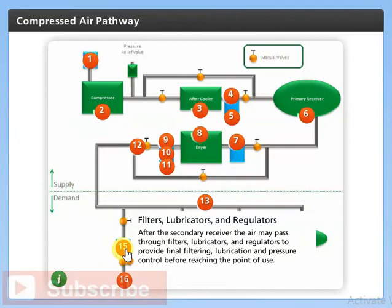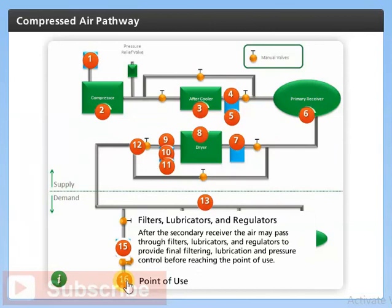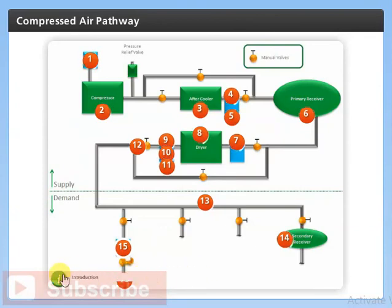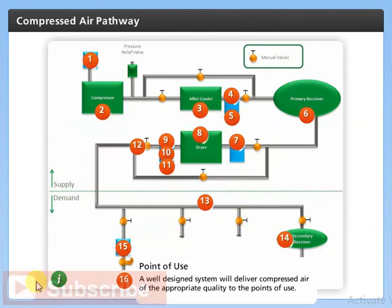After the secondary receiver, the air may pass through filters, lubricators, and regulators to provide final filtering, lubrication, and pressure control before reaching the point of use. A well-designed system will deliver compressed air of the appropriate quality to the points of use.